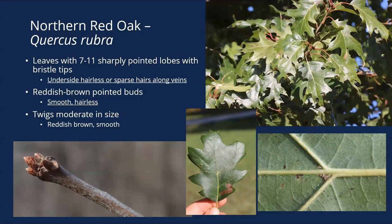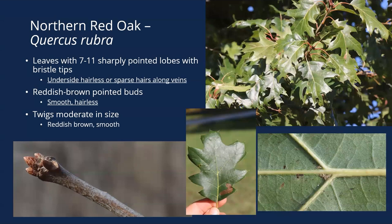Northern red oak leaves are usually 7 to 11 sharply pointed lobes with a lot of bristle tips. If you flip it over, the underside of the leaf is hairless, or sparse hairs only occur in little clusters right along the veins. That's important because you have to be able to distinguish this from black oak, which there's a lot of overlap. You can see in that bottom right picture there's pretty much no hairs except for a little cluster right at the intersection of the veins.